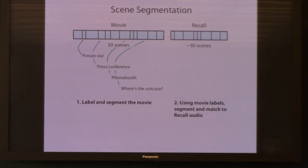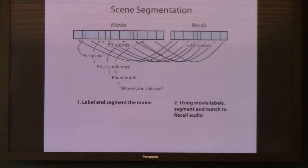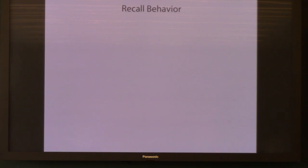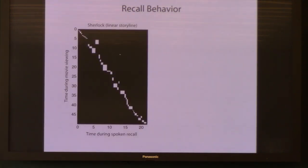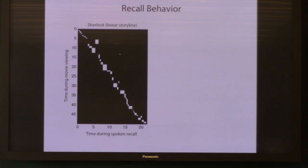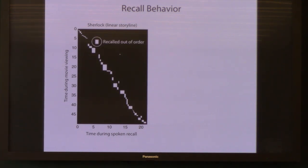The idea is that you're linking each event from the movie to each event from a person's recollection. Here's a way that we look at the behavior for an example subject. On the y-axis is time during the movie starting at zero at the top, and on the x-axis is time during recall for this person. Every event is a box on this diagonal — the height of the box tells you how long that scene was during the movie, and the width tells you how long it took for that person to describe it. The boxes fall along the diagonal, so this person is recalling things mostly in order, and when a box is off the diagonal, it means they recalled that one out of order.